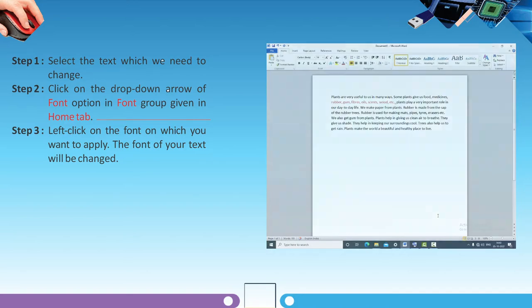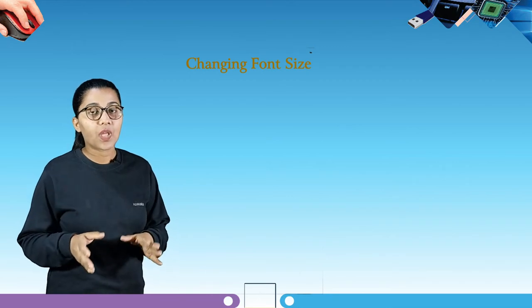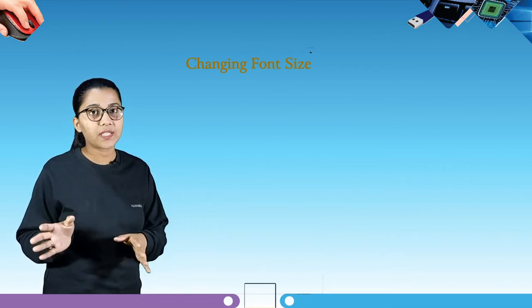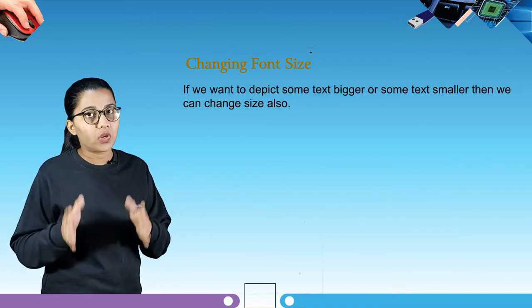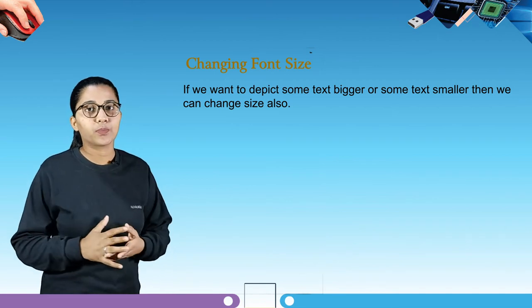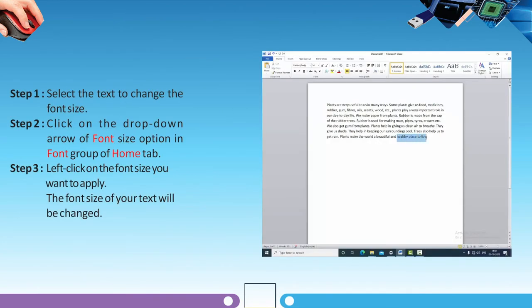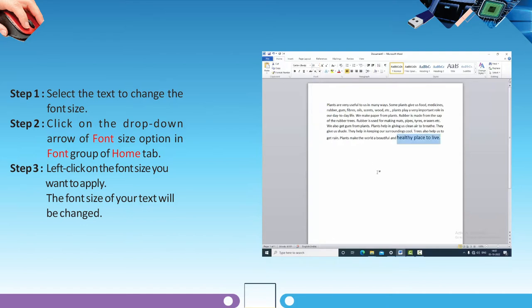Our next topic is changing font size. If you want to make some text bigger or smaller, you can change the size. Step one: select the text to change the font size. Step two: click on the drop-down arrow of the Font Size option in the Font group on the Home tab. Step three: left-click on the font size you want to apply. The font size of your text will be changed.